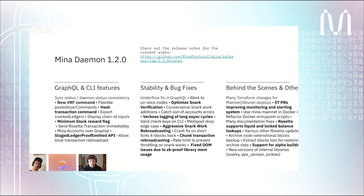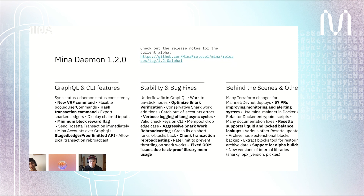We've fixed an out of memory error that was happening from time to time based on an issue with the zero knowledge proof library. On the alpha, we haven't seen this bug, which is really exciting. There have also been 57 pull requests that landed to improve monitoring and alerting of the MENA network. This will help O(1) Labs better understand what's going on from the perspective of what our nodes see, and be alerted in the case of anomalies so we can take action urgently if necessary.